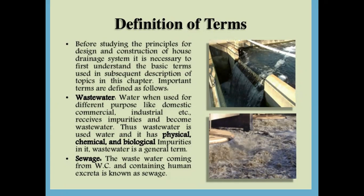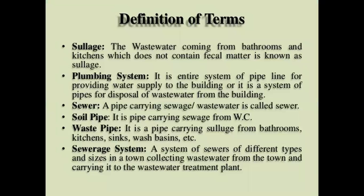Wastewater has physical, chemical, and biological impurities. Wastewater comes from water closets contaminated by human excretion, known as sewage sludge, and from bathrooms and kitchens. The plumbing system is the entire system of pipelines for providing water supply to a building or for disposal of wastewater from buildings. A pipe carrying sewage water is called a sewer. A soil pipe carries sewage from water closets, and a waste pipe carries sludge from bathrooms, kitchens, wash basins, etc.